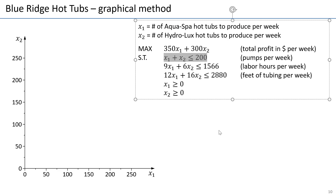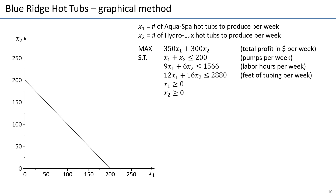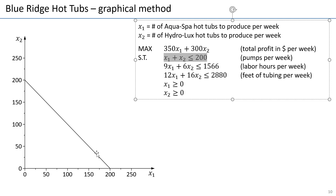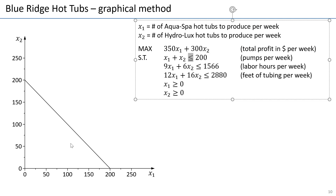We try to plot this, and if you plot a line with equality, you'll find it looks like this. There is a point (0, 200), there is a point (100, 100), up to (200, 0). So, as long as the sum of the variables is 200, points are on this line. We are interested in points that have less than or equal to 200 pumps used — equal means on the line, and less means below or to the left of this line.